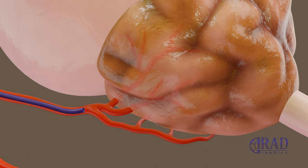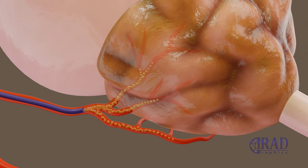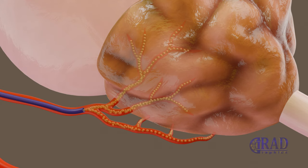The microwire is then removed and particles are injected into the ipsilateral prostate artery until cessation of blood flow.